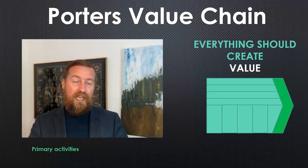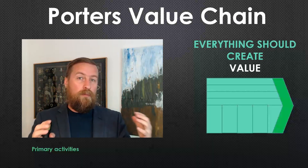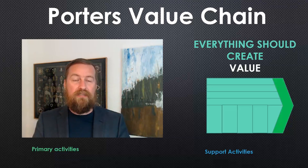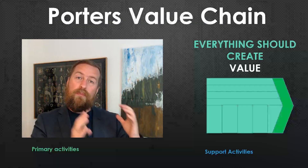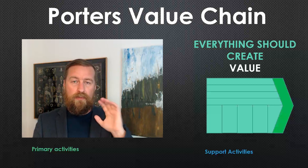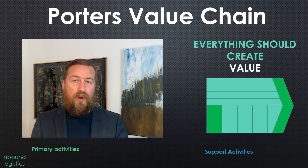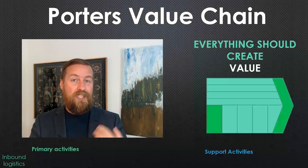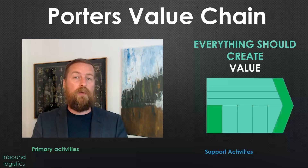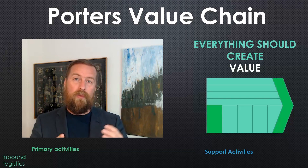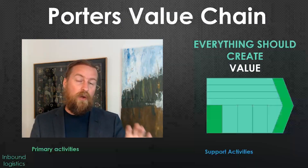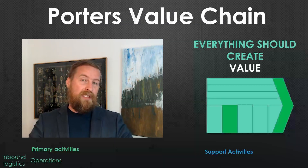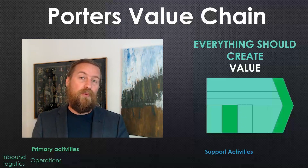We have the primary activities — that's the boxes on the bottom — which are the production side of things where the primary value creation is happening. Above it we have the support activities, the activities that we need to have in place in order for the primary activities to work. In the primary activities, the first one is inbound logistics. This is where we are receiving the raw materials, all the parts that we are going to do something with. We put them in the warehouse, we store them, we record them. After we have them on company premises, we do operations — manufacturing, production. We move things around and we make the product that we are going to ship to customers at a certain point later in time.